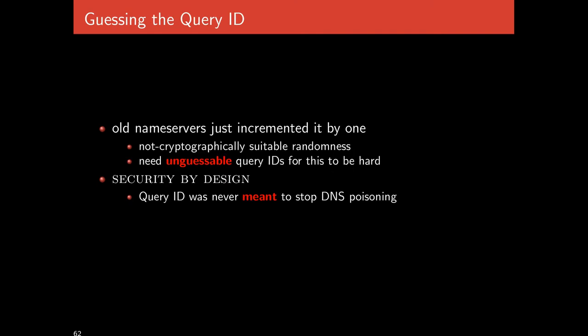So let's talk about how to actually do this — how do you guess the query ID? Well, first, it's not that big a number. It's big enough that you won't guess it on the first try, but it's not cryptographically strong. It's only 16 bits, and they were never meant to be cryptographically secure. Moreover, they used to just be incremented by one — it was a counter that started at some number and added one every time. So this is my 57th DNS query, this is my 58th. That's a great way to have different query IDs, but the design of DNS was not thinking about poisoning attacks.